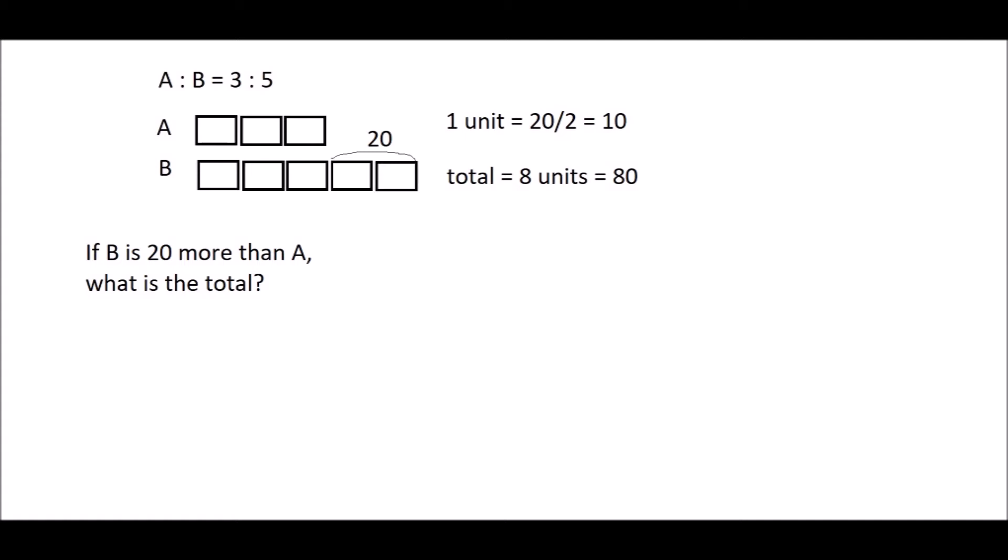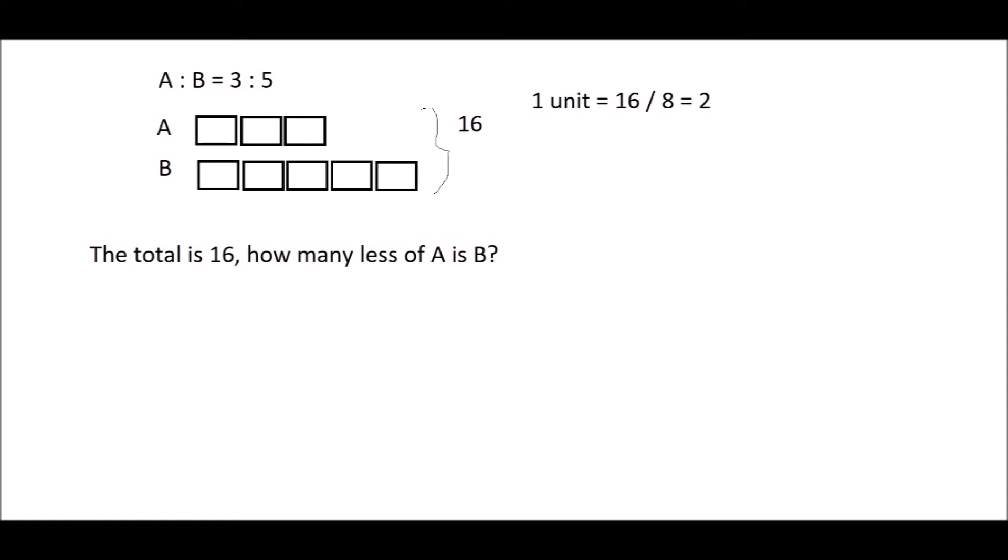Based on the knowledge that we know what is one unit, just multiply by the number of units there are. Next question is the same. If the total is 16, how many less of A is B? 16 is the total, that means 8 units is 16, and therefore we can find what is one unit and we can find the difference. Remember, less means the difference. Two units is the difference, we can just multiply it.